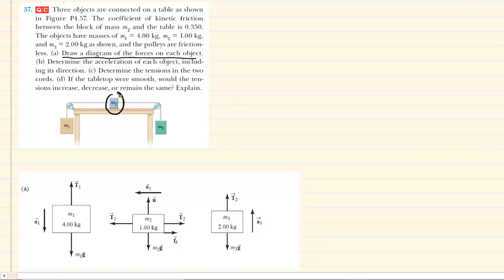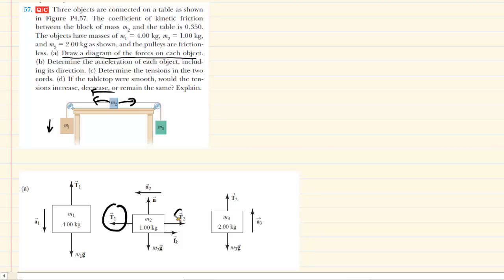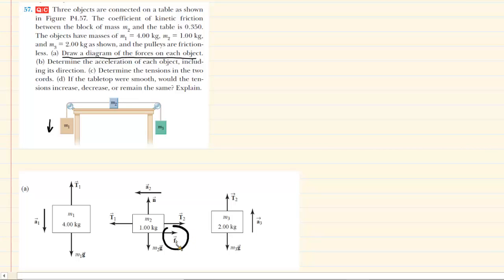Moving on to the object situated on the table, there are several forces acting on that mass. We have the gravitational force M2g pointing downward, and the table surface pushes up with the normal force. M2 is connected to two ropes — one on the left and one on the right. Since M1 accelerates downward, M2 accelerates to the left, so tension T1 is larger than tension T2. Additionally, the block slides across the table, so we have kinetic friction Fk acting on it.